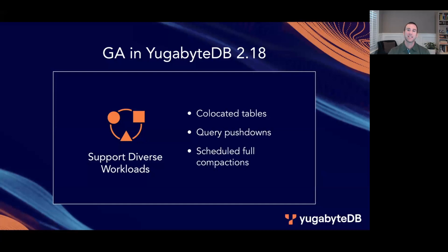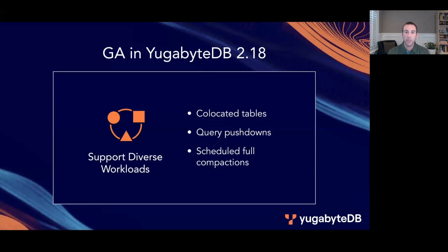Second, this release provides enhanced support for a diverse set of workloads. A revamped architecture for co-located tables is now generally available, providing you with granular control to have many smaller tables reside on a single tablet. These co-located tables help drastically eliminate query fan-out, while also helping optimize performance when handling both small and large tables.